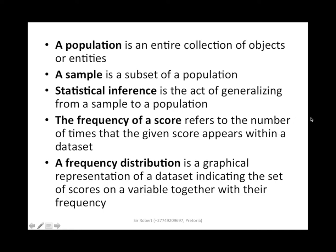The frequency of a score refers to the number of times that a given score appears within a data set. For example, we might have a data set with different numbers, say 1 to 20, so the frequency of each number is 1 because it appears only once. To demonstrate: let's say we have a data set with 2, 2, 1, 5, and 4. The frequency of number 2 is 2 because there are two 2s. The frequency of 5 is 1. So frequency refers to the number of times a given score appears within a data set.